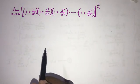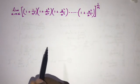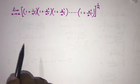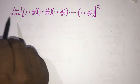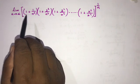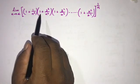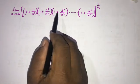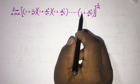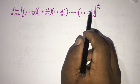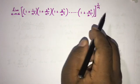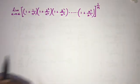Welcome to the Mathematics My Channel. Today we are going to solve another interesting limit question: the limit as n approaches infinity of (1 + 1/n²)(1 + 2²/n²)(1 + 3²/n²) dot dot dot (1 + n²/n²), all raised to the power 1/n.